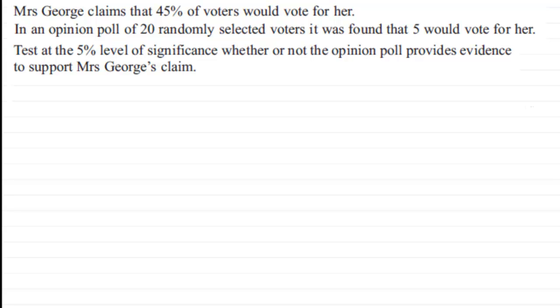Okay, welcome back. What we've got here is Mrs. George claims that 45% of voters would vote for her. In an opinion poll of 20 randomly selected voters, it was found that 5 would vote for her. We've got to test at the 5% level of significance whether or not the opinion poll provides evidence to support Mrs. George's claim.